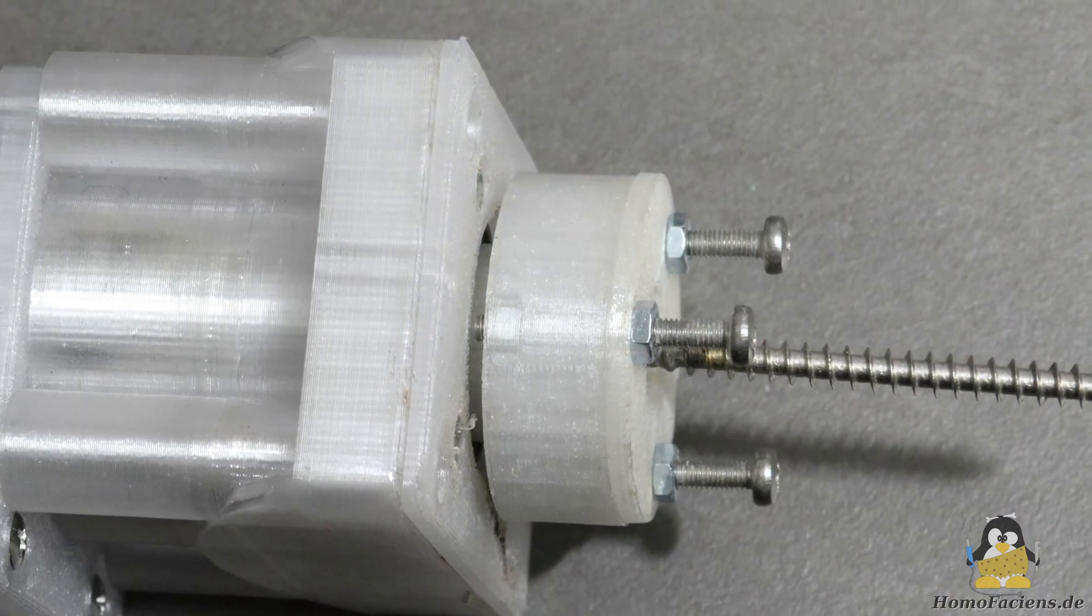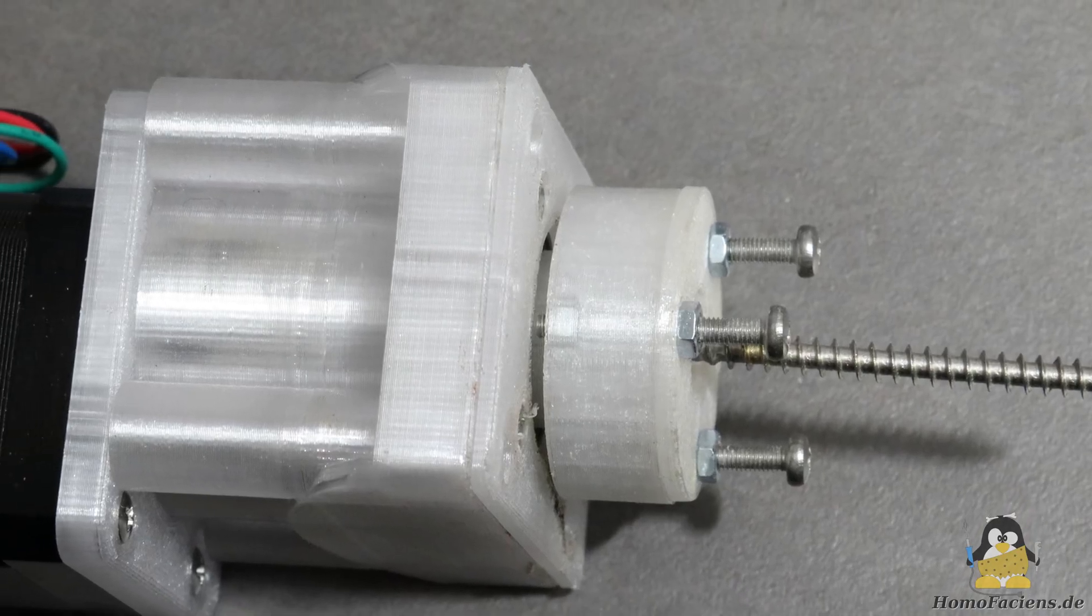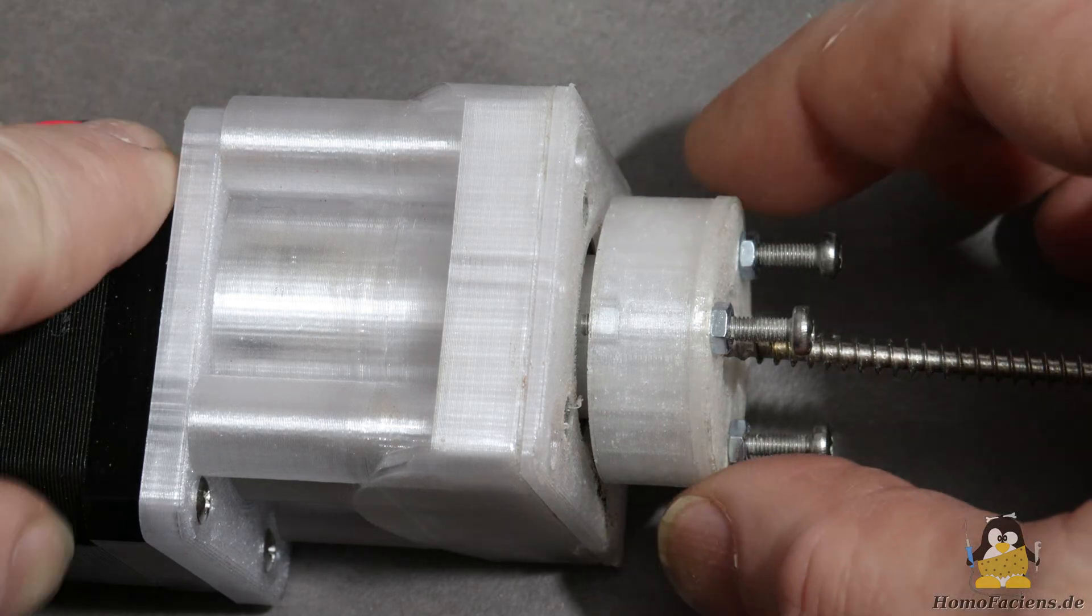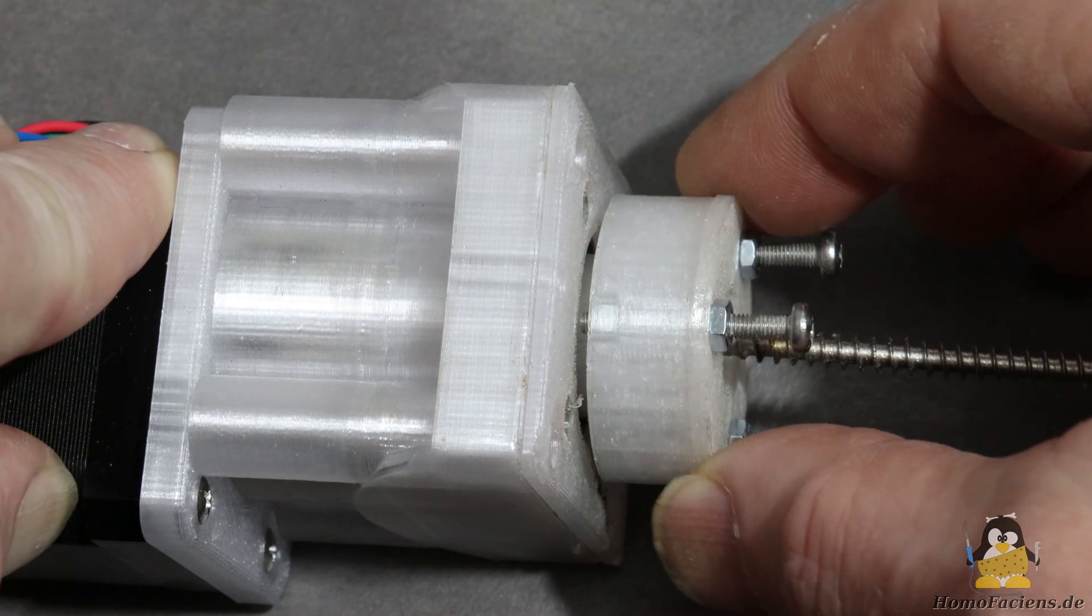The tolerances of my printed gears are larger than those of their industrially manufactured steel counterparts. Therefore, even when new, there is a noticeable radial backlash.